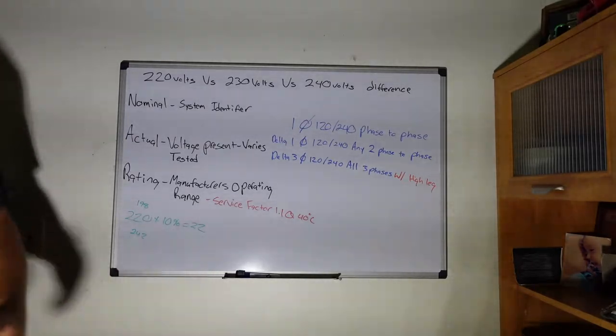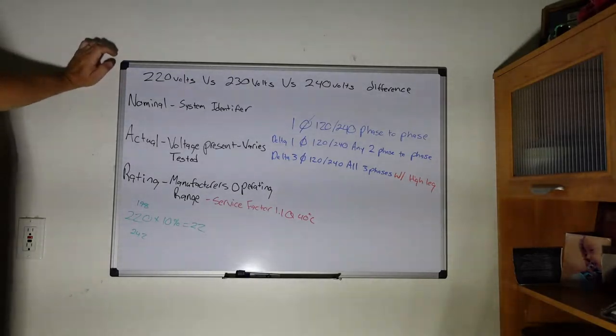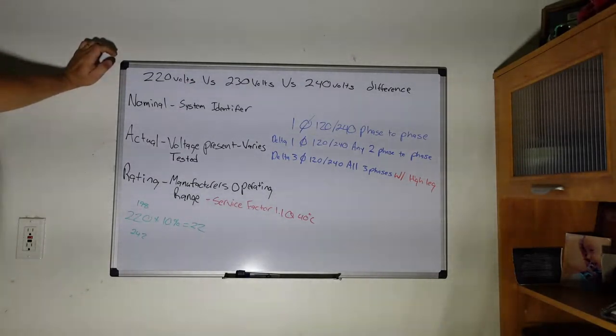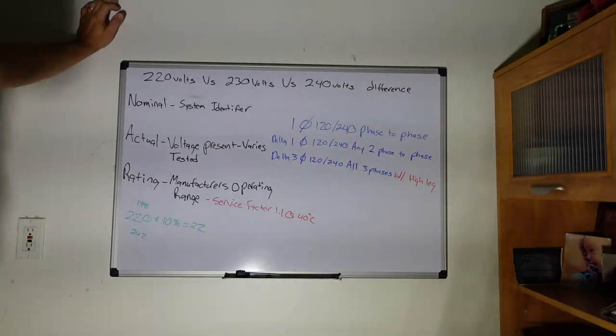Nominal voltage is going to be your system identifier. Whether you hear 220, 230, 240, it's technically the same thing. It's just given different names because sometimes ratings change, the actual voltage changes, and it kind of gets misconstrued within the trade.